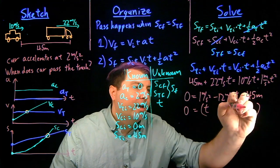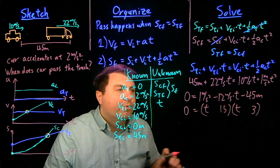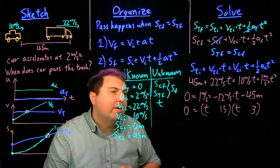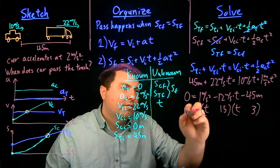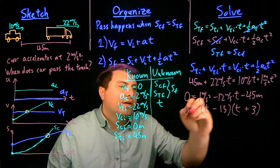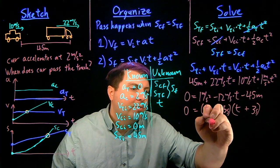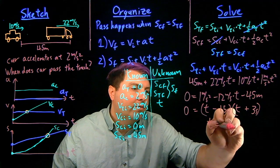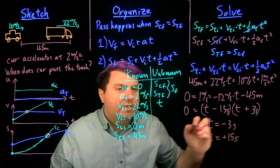I can figure out what two things multiply to equal 45 and what two things add or subtract to equal 12. Well, if I have a 3 and a 15, 3 times 15 is 45. And then some combination of 3 and 15 will give me 12. So if I do T minus 15 and T plus 3, and this is in seconds and seconds, this would give me two possible answers of T equals negative 3 seconds and T equals plus 15 seconds.